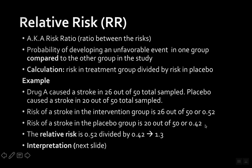Just notice that the scenario can change — in our case, we have more patients developing the stroke in the intervention group, which is fine. So the relative risk is 0.52 divided by 0.42, where 0.52 comes from the intervention group risk and 0.42 comes from the placebo group risk, giving us 1.3.